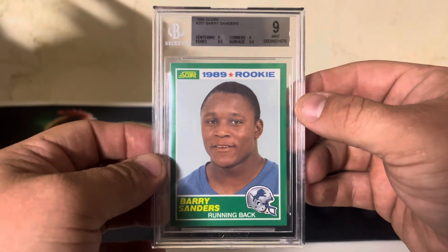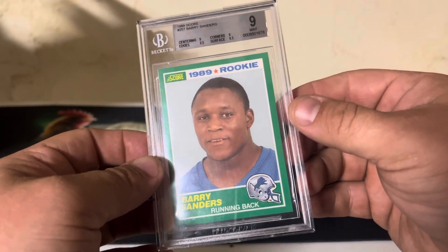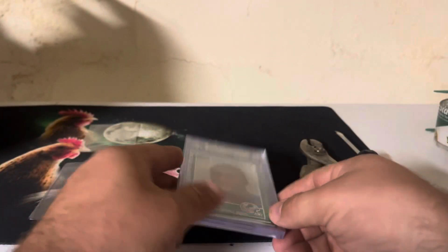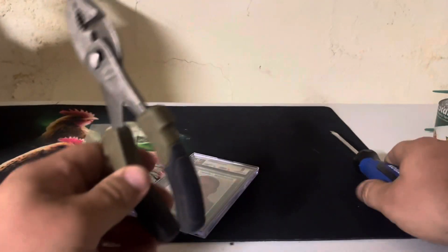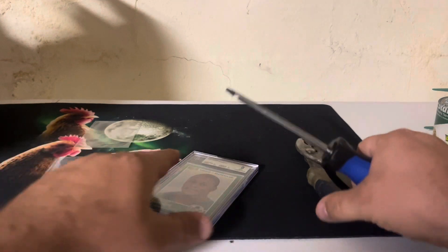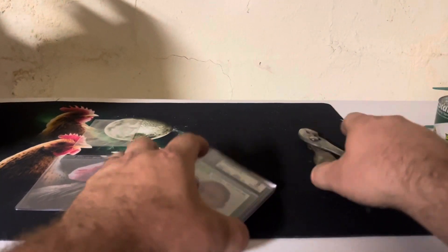So we're going to pop this out and we're going to put it into a card sleeve and send it to PSA. So we've got a couple tools here. We've got some pliers, got a screwdriver, and we've got our card saver and a clean penny sleeve.